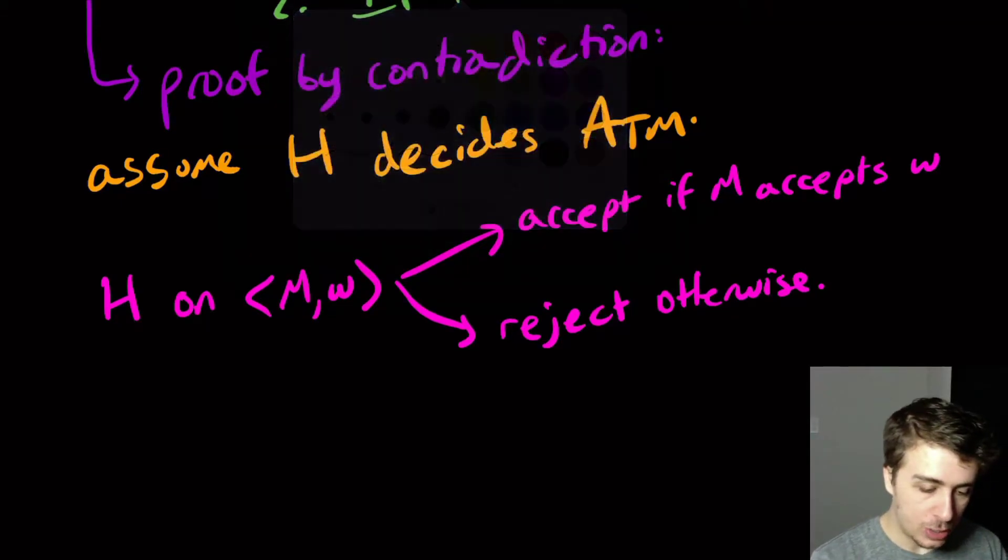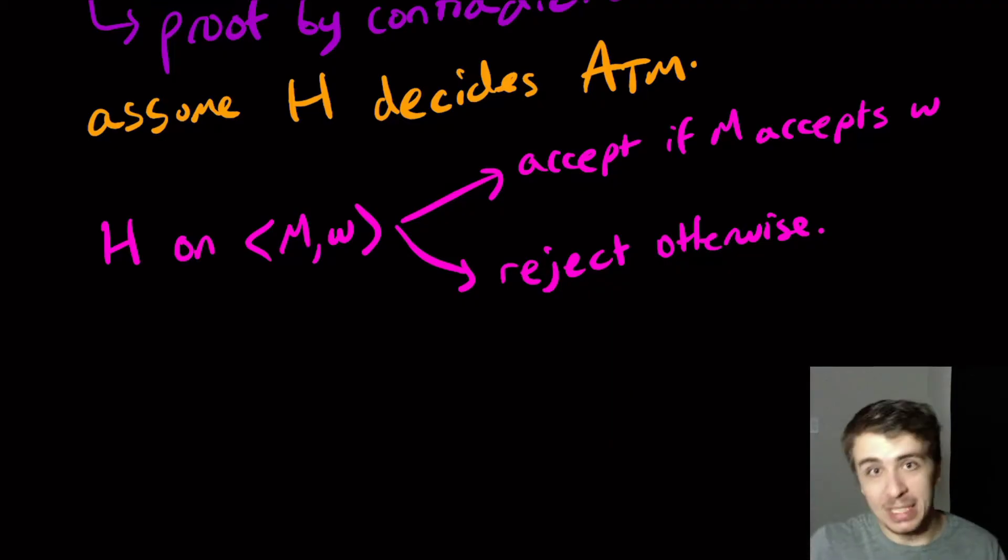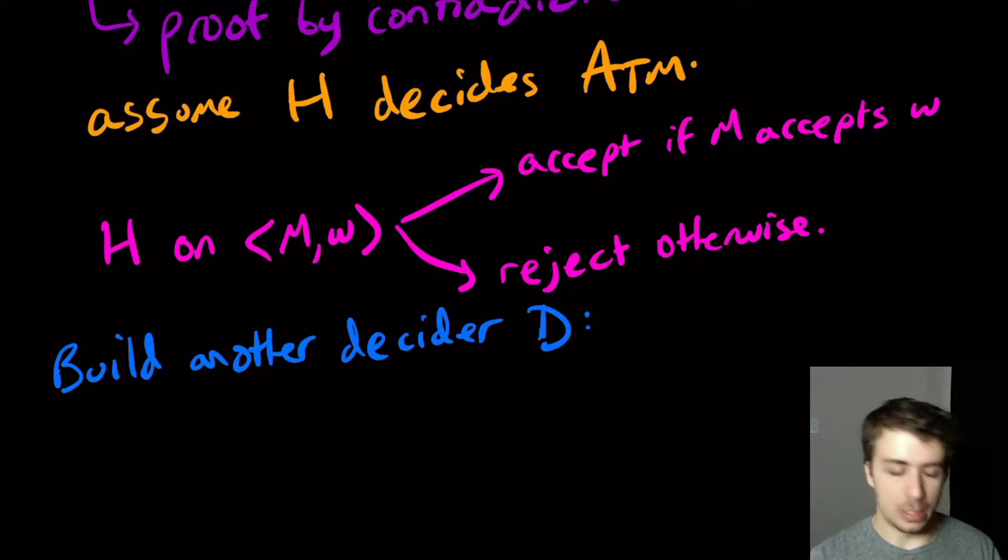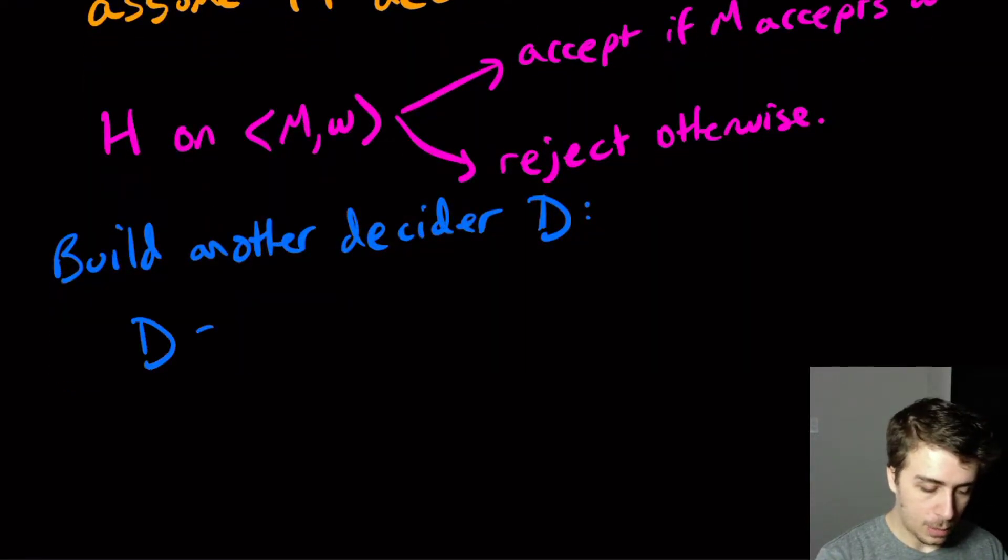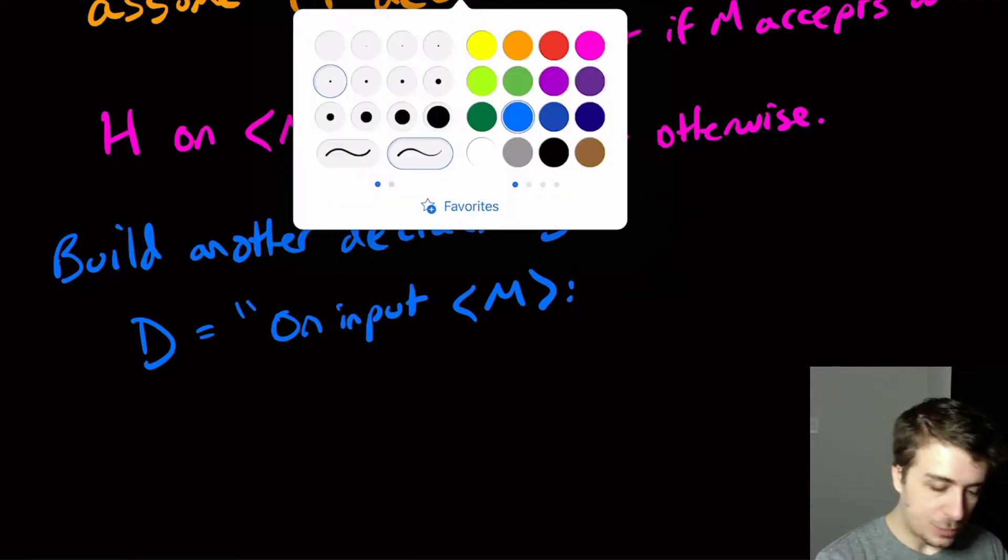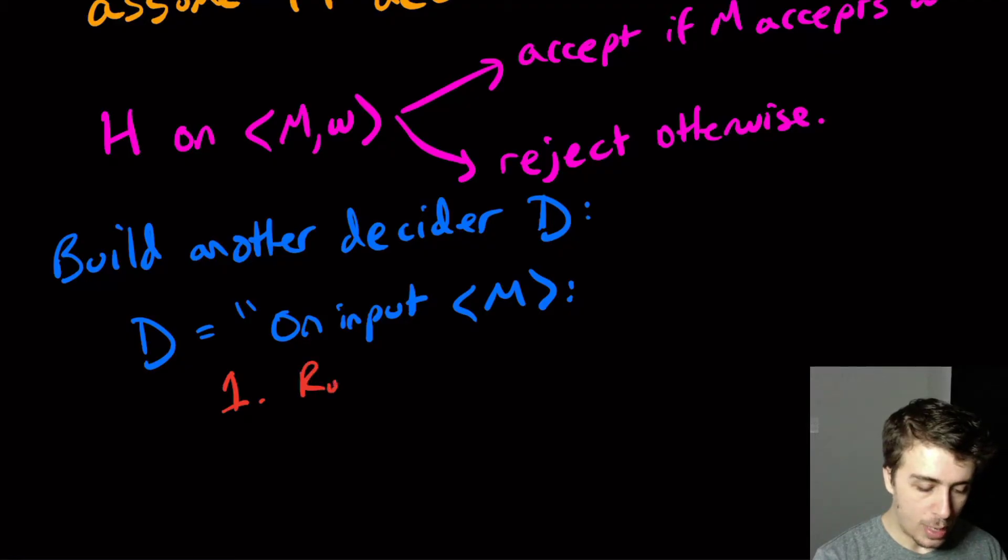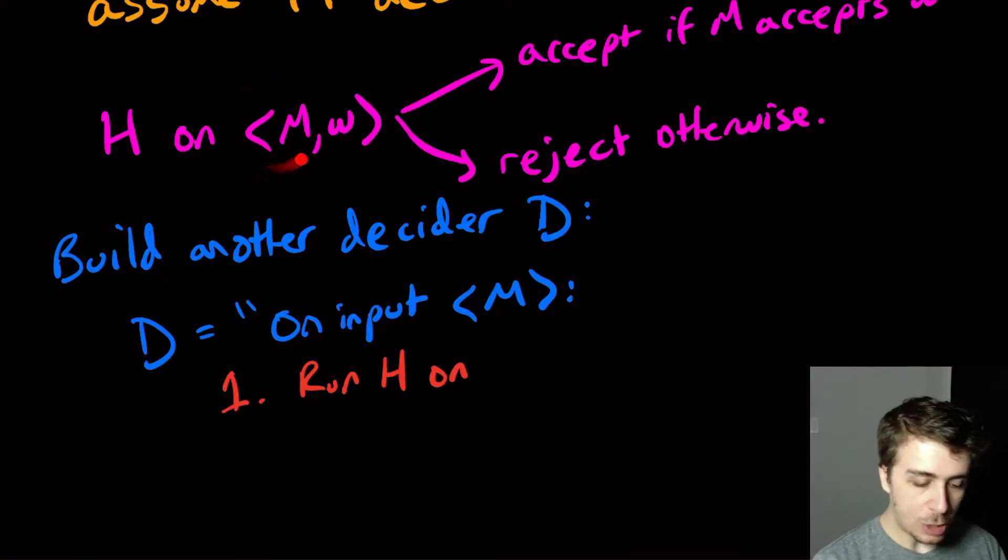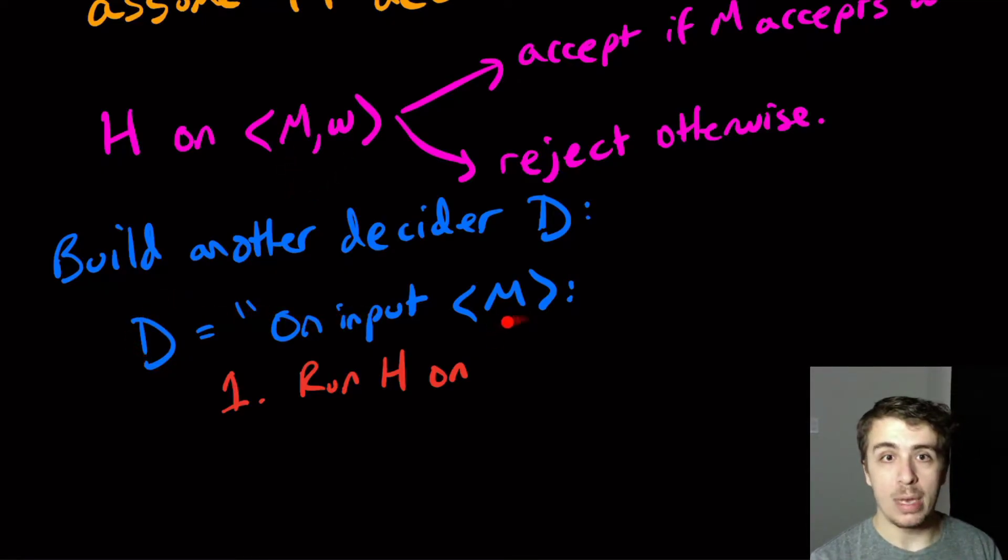In fact, the contradiction is going to come from creating another machine that will help us get a contradiction. So we're going to build another decider for a completely different problem, but it's a decider. And what it's going to do is this. So D's instructions are, it's going to be given a single Turing machine and nothing else. And what its first step is going to do is it's going to run that supposed decider H upstairs. It's going to run H on, well, the H machine requires two inputs right here, you see M and W, whereas the D machine only has one input, the machine.